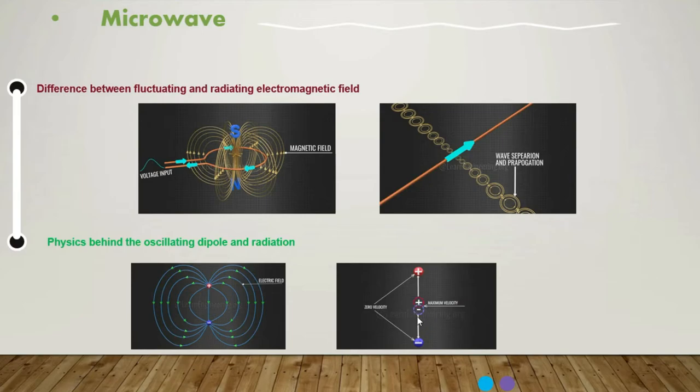Now assume that these charges are oscillating like this one in this graph. At the midpoint of the path, the velocity will be at maximum, and at the end of their path, the velocity will be zero. The charges undergo continuous acceleration due to the velocity variation.